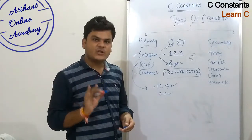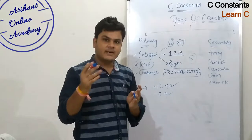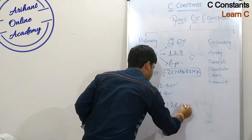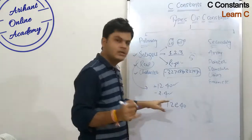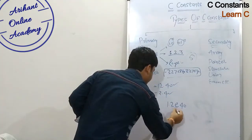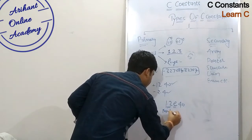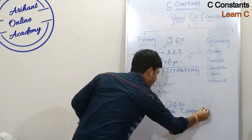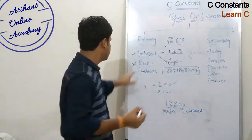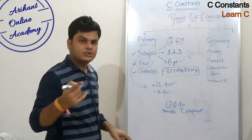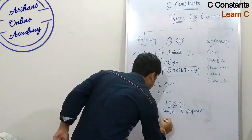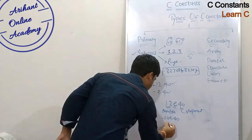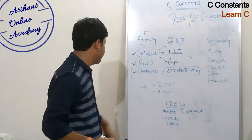If you talk about exponential form, real constants can also be expressed as, for example, 1.2e4.0. The value before 'e' is called the mantissa and the value after 'e' is called the exponent. The exponent can also be positive or negative, like minus 1.2e4 or 2.4e minus 4.